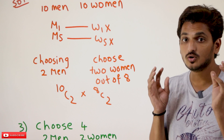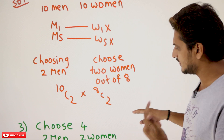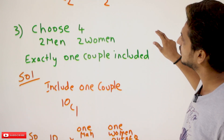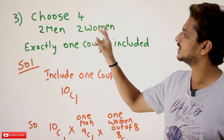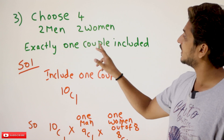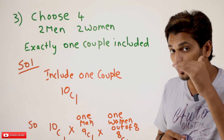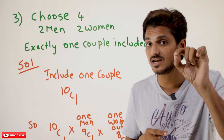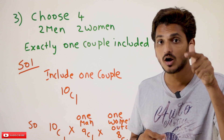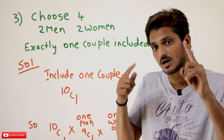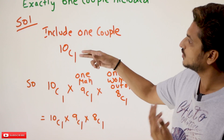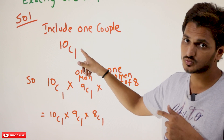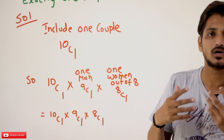You are not supposed to include a couple. The same logic applies to the next one. If you understand the second one, the third one is very easy. Choose 4 members where you should have 2 men and 2 women, and exactly 1 couple should be included. You are having 10 couples total. From the 10 couples, you choose exactly 1 couple. First, choose 1 couple — any 1 couple. How many ways? 10 couples available, choose 1: that is 10C1 ways.